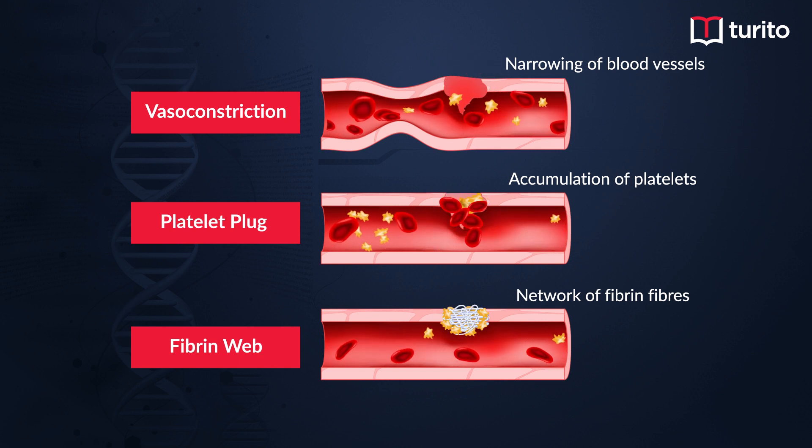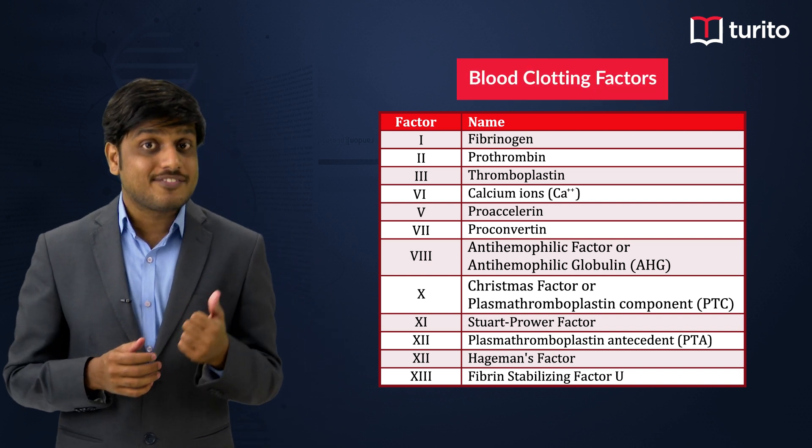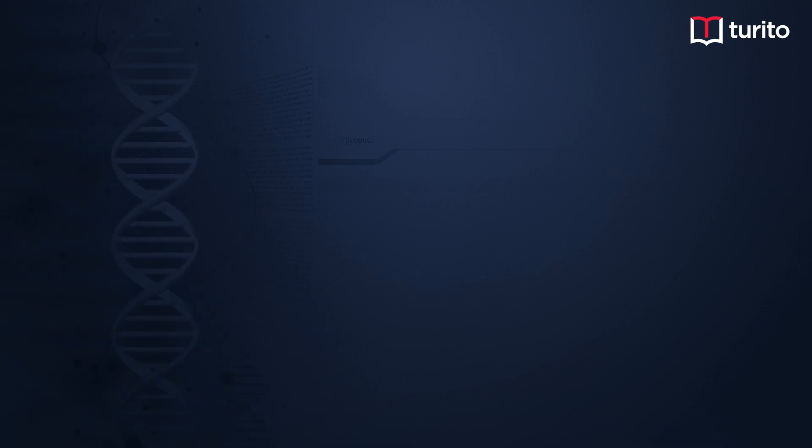The process of blood coagulation is also referred to as hemostasis. Whenever there is an injury to the blood vessel, hemostasis is activated. The blood clotting mechanism mainly explains the formation of the fibrin web near the platelet plug. There are 13 different proteins associated with the blood clotting mechanism, also called blood clotting factors. The mechanism can be initiated through two different pathways: the intrinsic pathway and the extrinsic pathway.